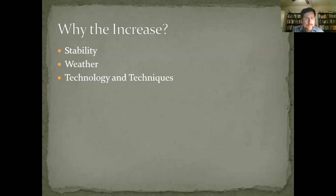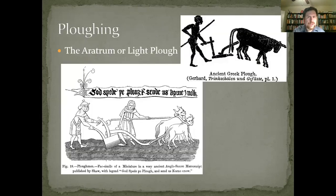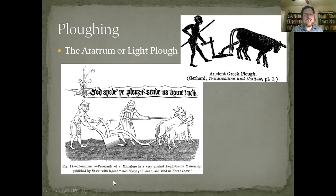This better weather is also coupled with important new changes in agricultural technology and farming techniques. First, we see the introduction of a new type of plow — what we call the heavy plow. Since the time of the Romans, people in western Europe have been using what we call the aratrum, or light plow. It's made of wood with a little hook on the end that turns up the soil, and then you plant your seeds.